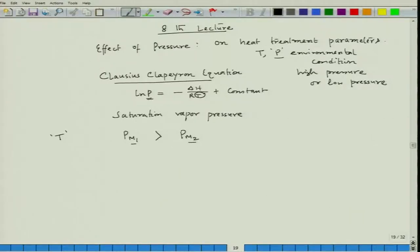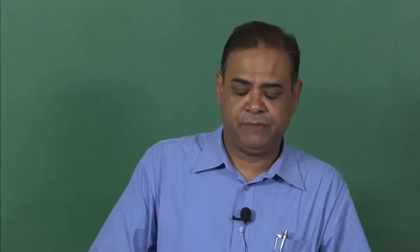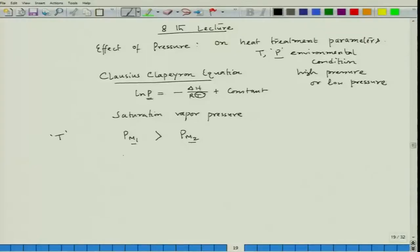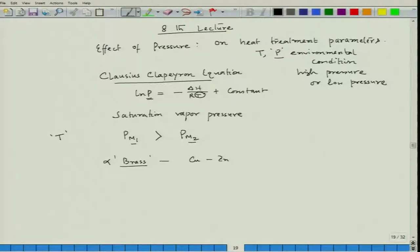This understanding can help us decide the temperature and pressure for doing heat treatment. Let us consider the heat treatment of brass. Alpha brass is an alloy of copper and zinc — around 30 percent zinc can be mixed into solution with copper. In that brass, if we compare the saturation vapor pressure of copper and zinc, we can use data from a handbook.